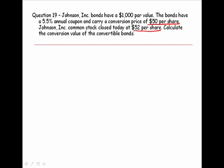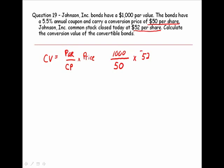Let's start with our formula. The conversion value is equal to the par value divided by the conversion price, times the price of the stock. $1,000 is the par value. The bond is convertible into shares worth $50 — that's the conversion price. We multiply that times the market price of the stock.